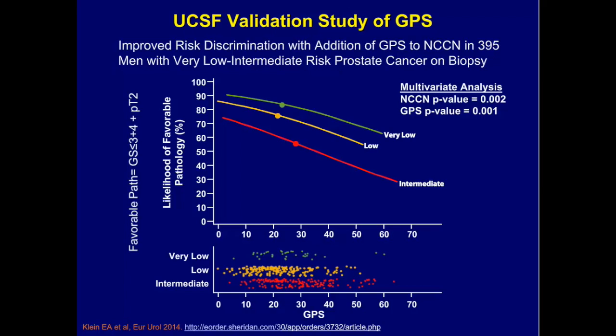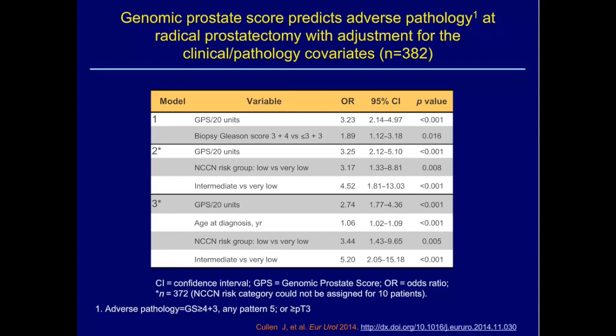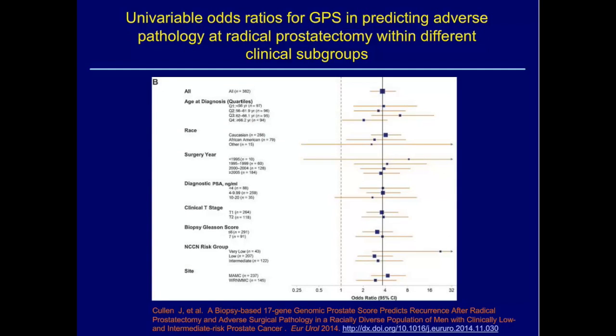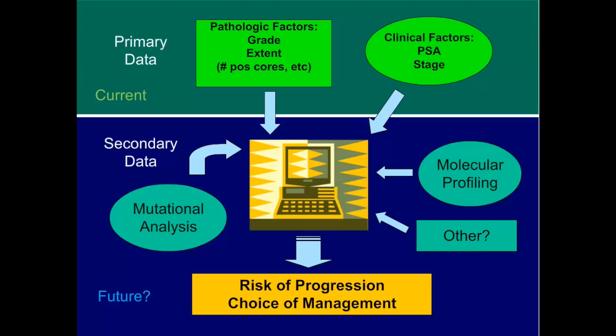Looking at NCCN risk groups — very low, low, and intermediate — and their likelihood of having favorable pathology, defined by 3+4 or less and organ-confined disease, the Oncotype DX Genomic Prostate Score (GPS) showed improved discriminative ability across all risk groups for predicting favorable pathology. A more recent validation cohort confirmed that the GPS score per unit had very strong odds ratios for predicting adverse pathology at radical prostatectomy. Importantly, this also held up in racial minorities — 20% of that study population was African-American.